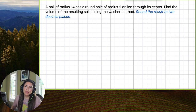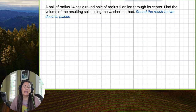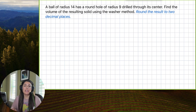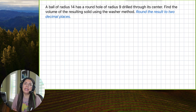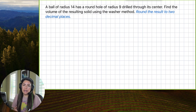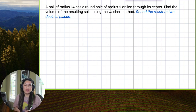In this example we're going to take a ball with the radius of 14 and drill a hole out of it — the radius of that hole is 9 — right through its center. We're going to find the volume of the resulting solid using the washer method.